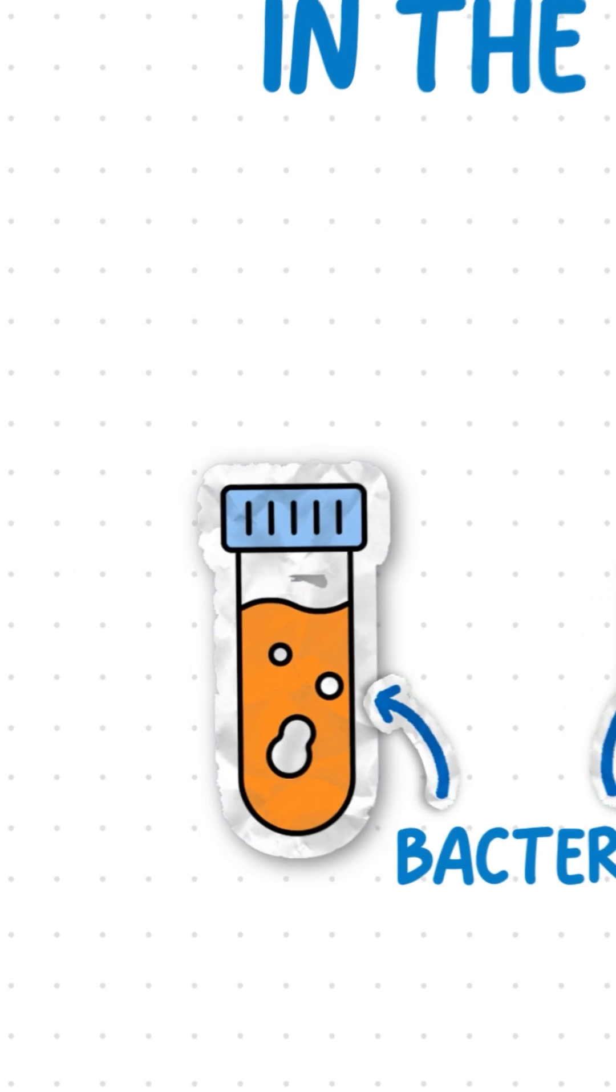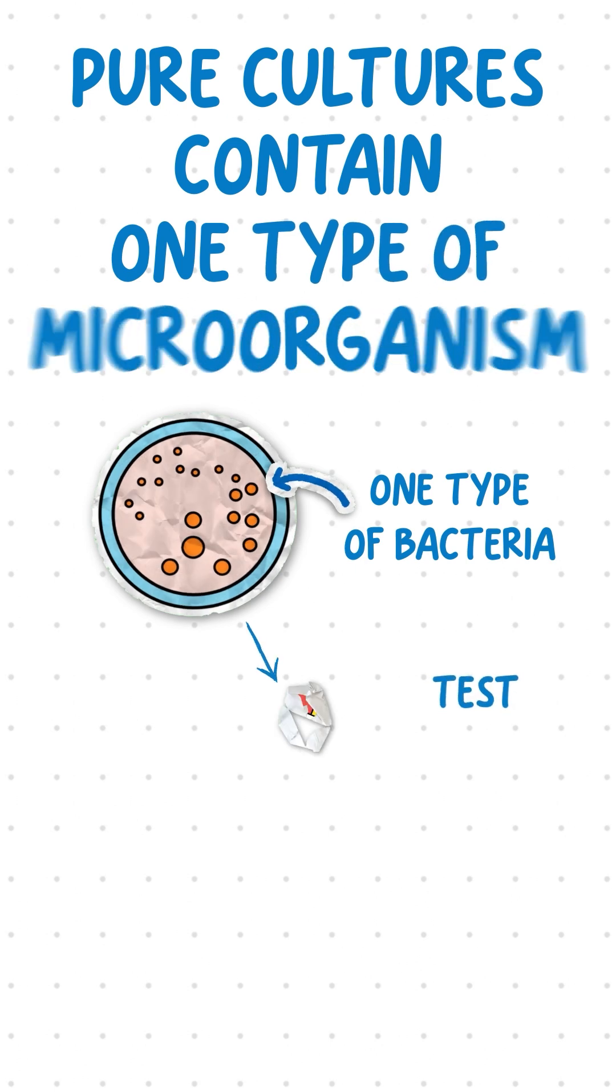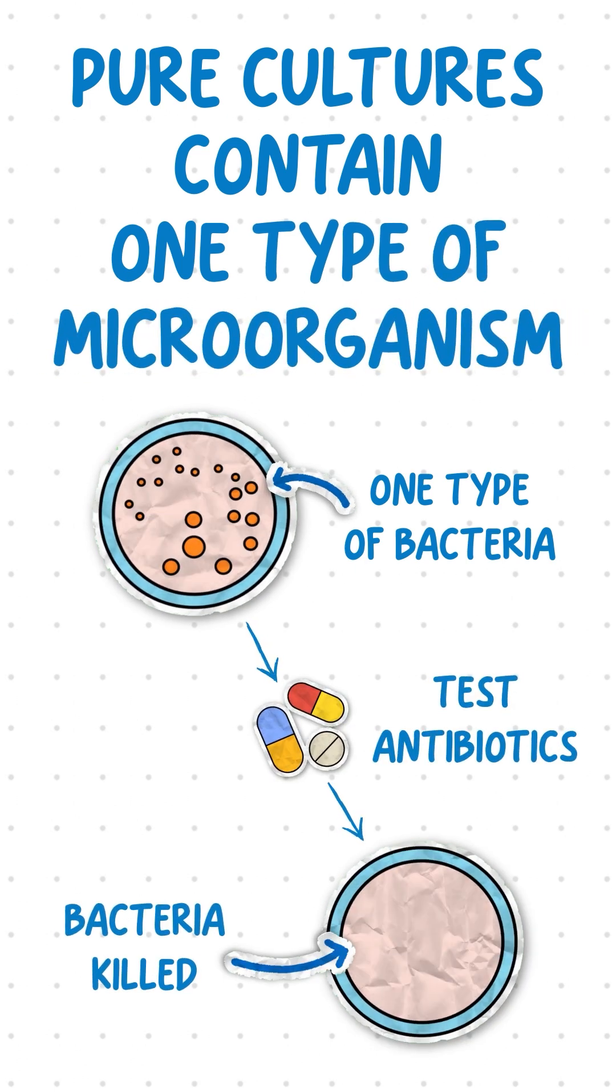Bacteria are grown in the lab in a nutrient broth or on an agar plate. This is known as culturing. Pure cultures contain only one type of microorganism and are used to test antibiotics.